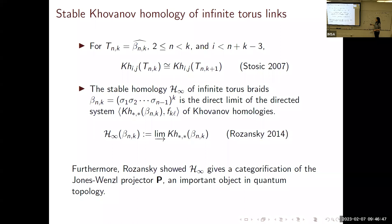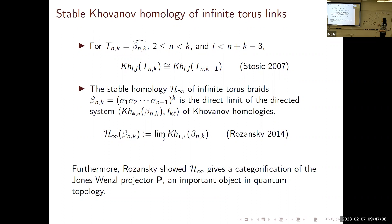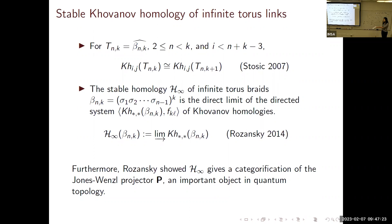It's very interesting that infinite twisting in some sense recovers the Jones-Wenzl projector, which is what you can use to define the colored Jones polynomial. What Rozansky doesn't explicitly show is that each of these finitely many full twists on n strands approximates the categorification of the Jones-Wenzl projector. You could use the Khovanov homology of finitely many full twists to approximate the Jones-Wenzl projector, but he doesn't say explicitly how.